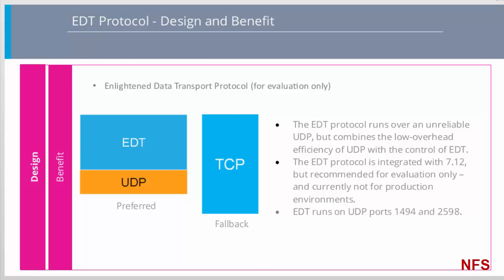EDT runs over UDP, but unlike Framehawk and Real-Time Audio, EDT does not require a range of UDP ports to be open to operate. Instead, EDT runs on UDP ports 1494 and 2598 — the same as standard Citrix TCP ports 1494 and 2598 — which simplifies network configuration. Although UDP is connectionless, EDT supports port sharing for multiple receivers, allowing the same visibility in HDX policy control as previous ZenApp, ZenDesktop, and receiver versions.